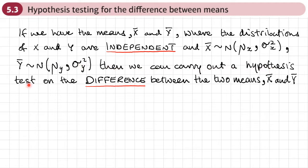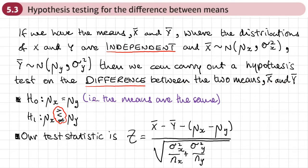When we do this hypothesis test, H0 is always going to be that the means are the same — that they're equal. H1 is going to be either that they're not equal to each other, or that one is greater than or less than the other. The way we test whether we accept or reject H0 is by calculating our test statistic Z.